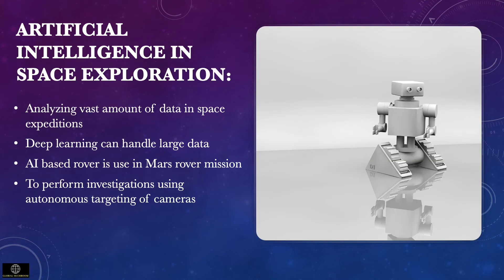Space exploration always requires analyzing a vast amount of data. Now artificial intelligence and deep learning can handle and process data on this scale. NASA is also using applied AI for rover missions. The AI-based Mars rover, called Aegis, is already on the red planet, and is responsible for performing investigations on Mars using autonomous targeting of cameras.